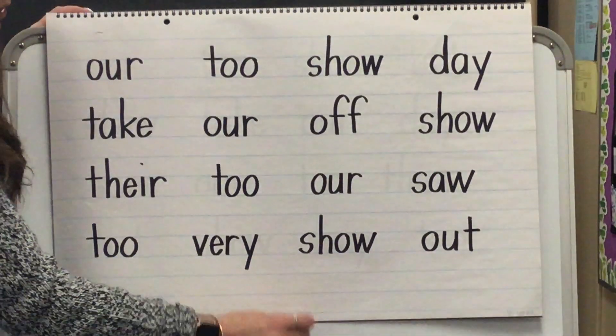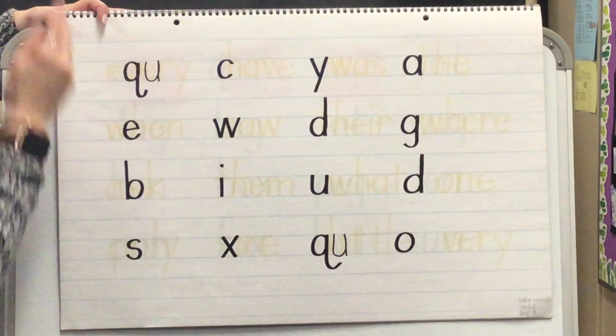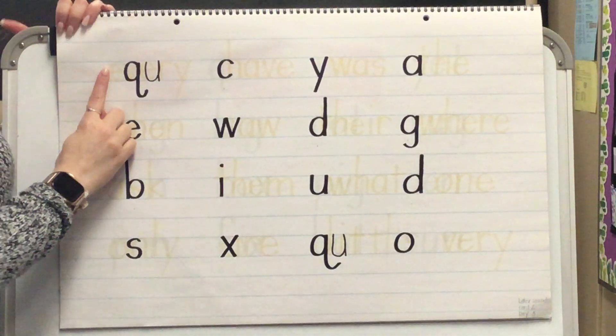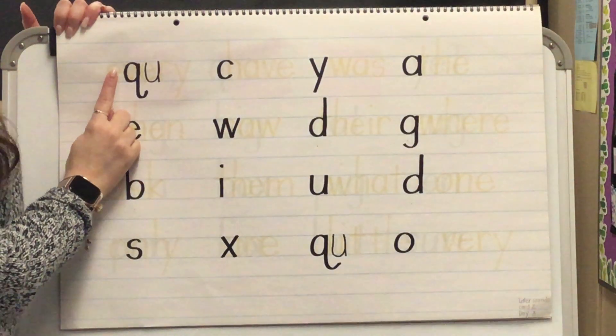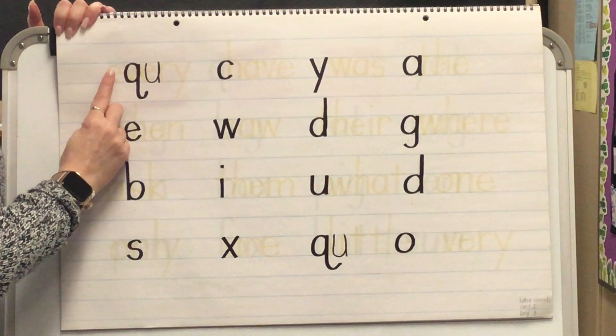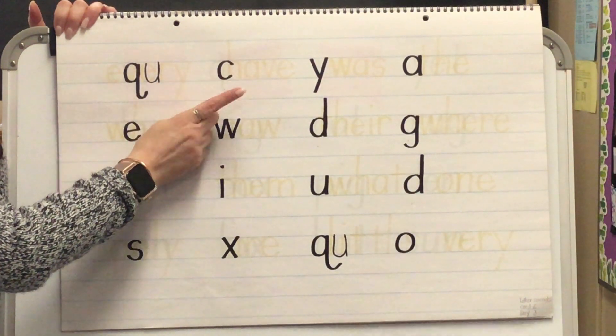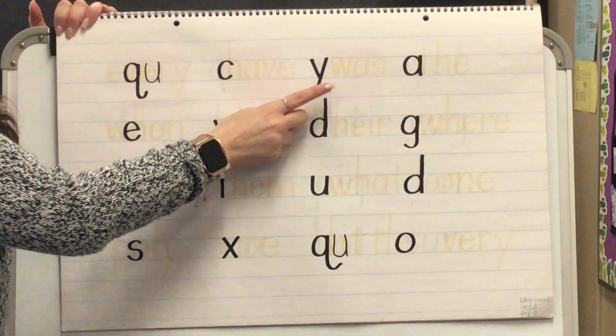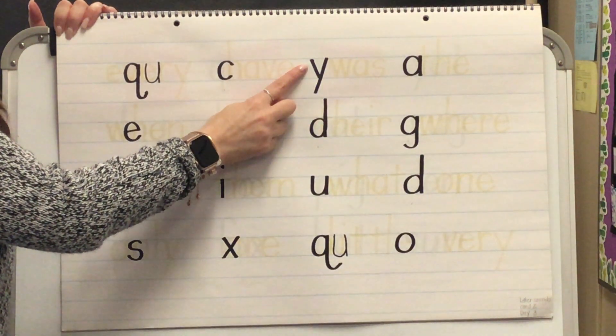Now we're going to practice saying the sounds. Ready? Sound — yes. Sound — yes, kuh. Sound — yes, ee. Sound — yes, ah. Sound — yes, ee.